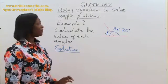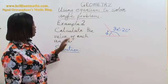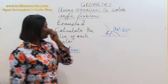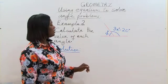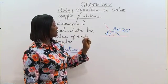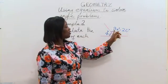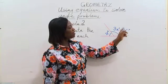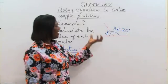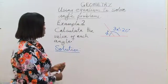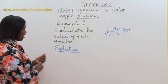Example 2. Calculate the value of each angle. In example 2, we have a straight line with two angles. The first angle measures x degrees. And the second angle is 3x minus 20 degrees. We want to find the value, the actual value of the two angles. Since there are angles on a straight line,